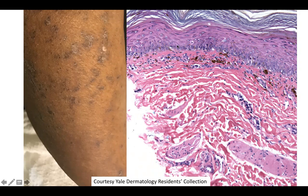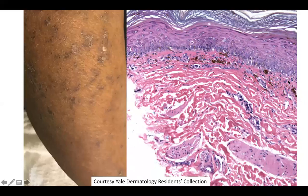Biopsy findings include hyperkeratosis with slight parakeratosis in some areas, with vacuolar change as well as some necrotic keratin sites scattered near the basal layer. There's pigment incontinence and a relatively sparse inflammatory infiltrate of lymphocytes.